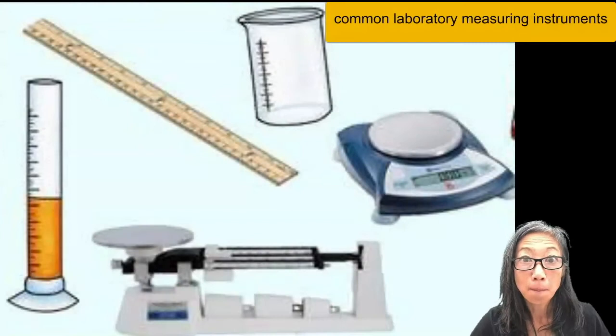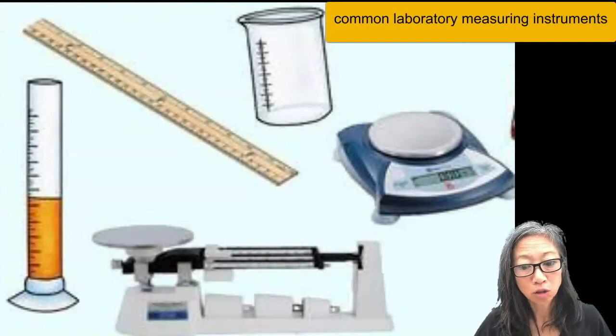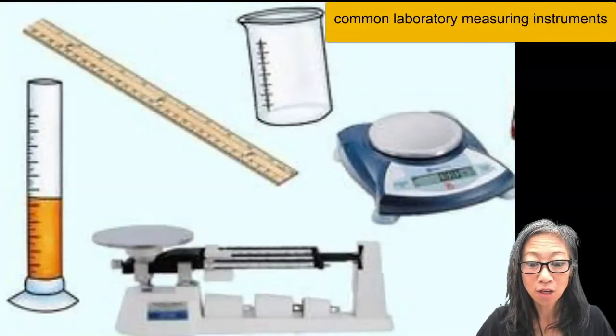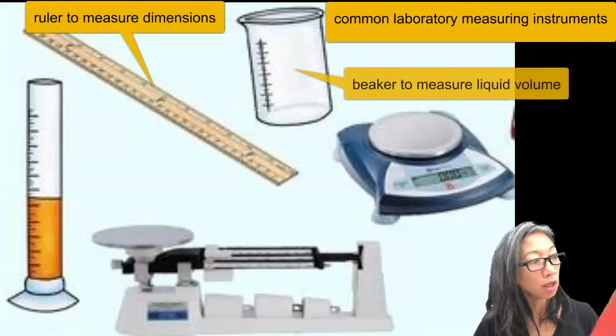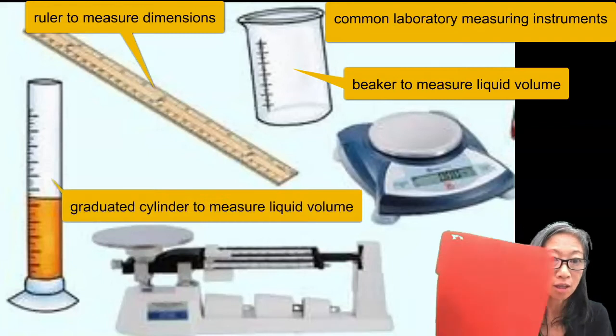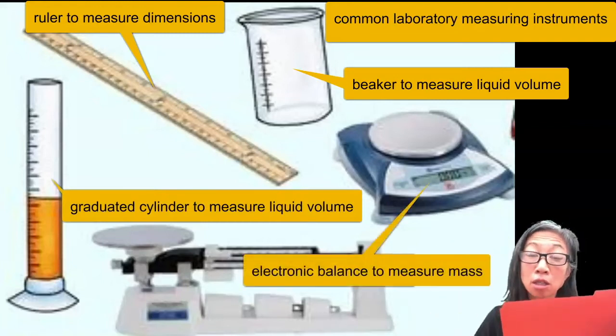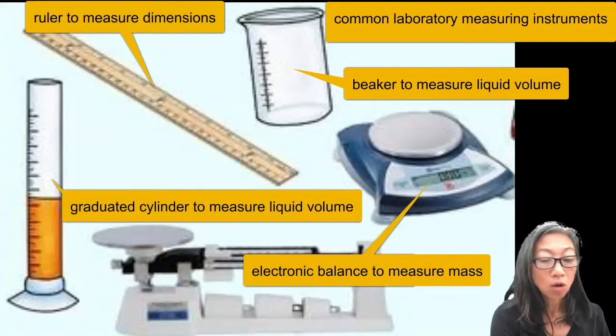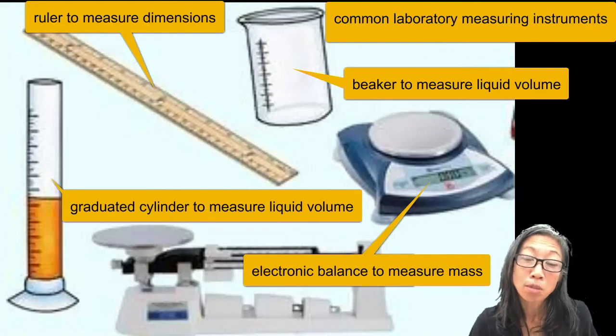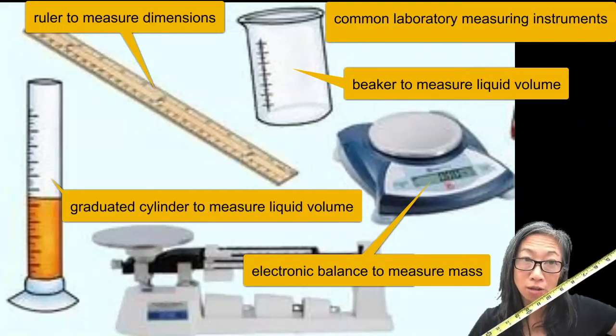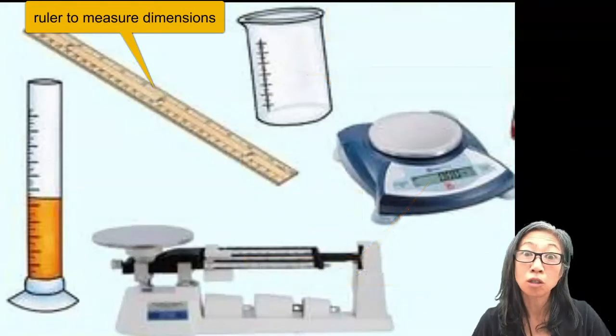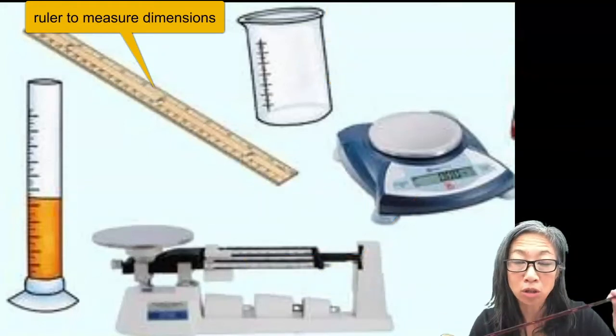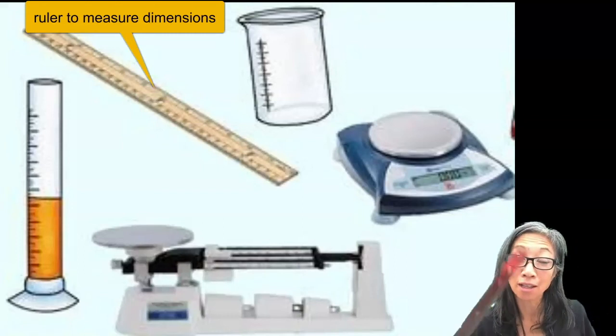In chemistry and science, measurements are used to gather quantitative information, which is then called data. For example, if you were given this and asked to measure the dimensions, the length and the width, what would you use to measure it? Maybe a tape measure like this, or in a chemistry lab you would typically use a metric ruler to measure dimensions of length and width.